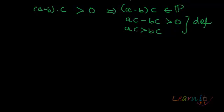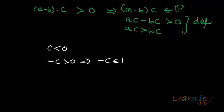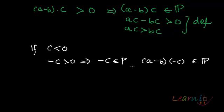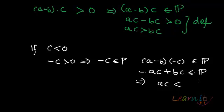Now, what will happen if C is less than 0? If C is less than 0, then minus C will be greater than 0, which means minus C belongs to P. With all other conditions intact, if I multiply A minus B by minus C, that product belongs to P since it's a product of two elements of P. This gives minus AC plus BC belongs to P, which implies AC is less than BC, or equivalently BC is greater than AC.